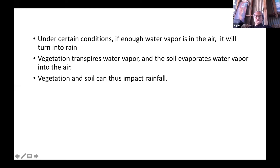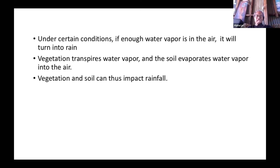Under certain conditions, if there's enough water vapor in the air, it will turn into rain. Vegetation transpires water vapor and the soil also evaporates water vapor into the air. So therefore, vegetation and soil can impact rainfall that way. It's a simple enough idea, but people are not as aware of it as they maybe could be.